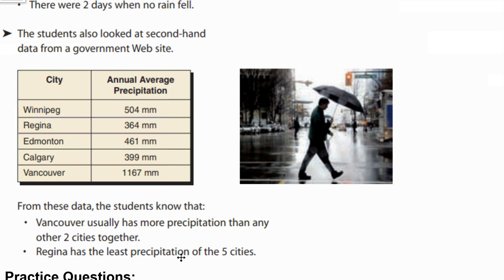Regina has the least precipitation of the five cities, so Regina tends to be the most dry of all those cities. Because the students are looking at this information from a government website, they did not go to Winnipeg, Regina, Edmonton, Calgary, and Vancouver for a full year to record how much rain they received — this would be second-hand data.